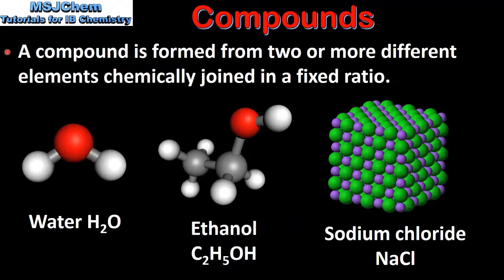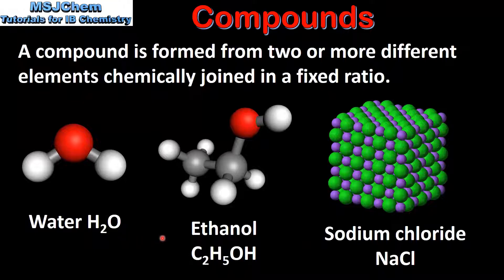Next we look at compounds. A compound is formed from two or more different elements chemically joined in a fixed ratio. Examples of compounds include water, ethanol and sodium chloride. Both water and ethanol exist as molecules. Sodium chloride does not exist as molecules; instead it has a lattice structure. The different types of bonding and structure will be covered in topic 4.